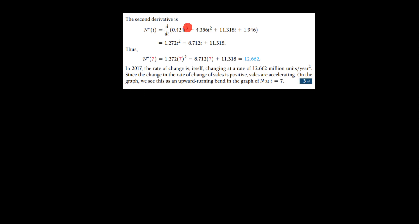This is our first derivative, and note the notation: we're taking the derivative of the derivative. It's not complicated — no product rule, no chain rule, no quotient rule; just simply taking the derivative of each term. Plugging in t = 7, we get n″(7) = 12.662.